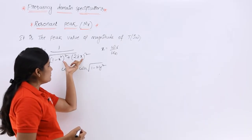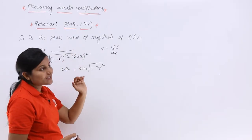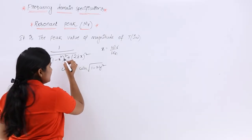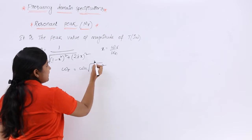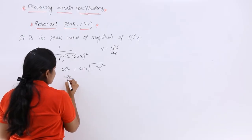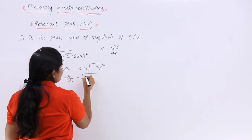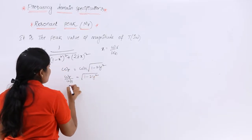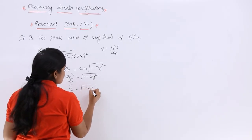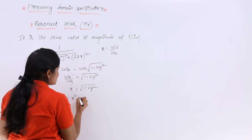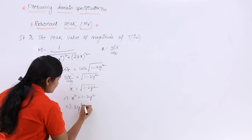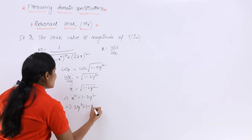When we substitute this resonant frequency, we are going to get the resonant peak, indicated as Mr. We cannot substitute omega r or omega n directly — instead, in terms of x we substitute. So omega r by omega n is equivalent to root of (1 minus 2 zeta squared), meaning x equals root of (1 minus 2 zeta squared). From this, x squared equals 1 minus 2 zeta squared.